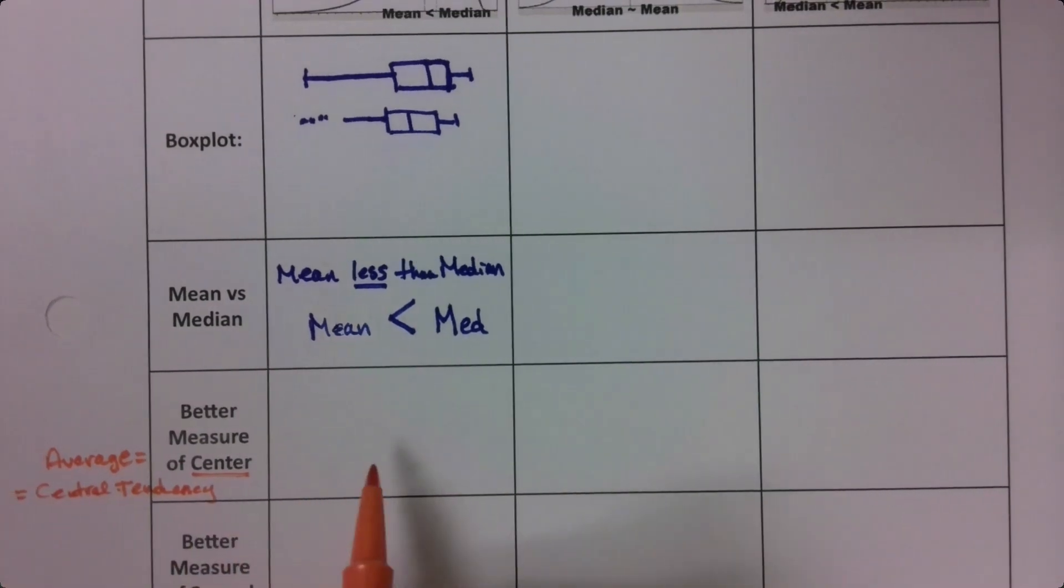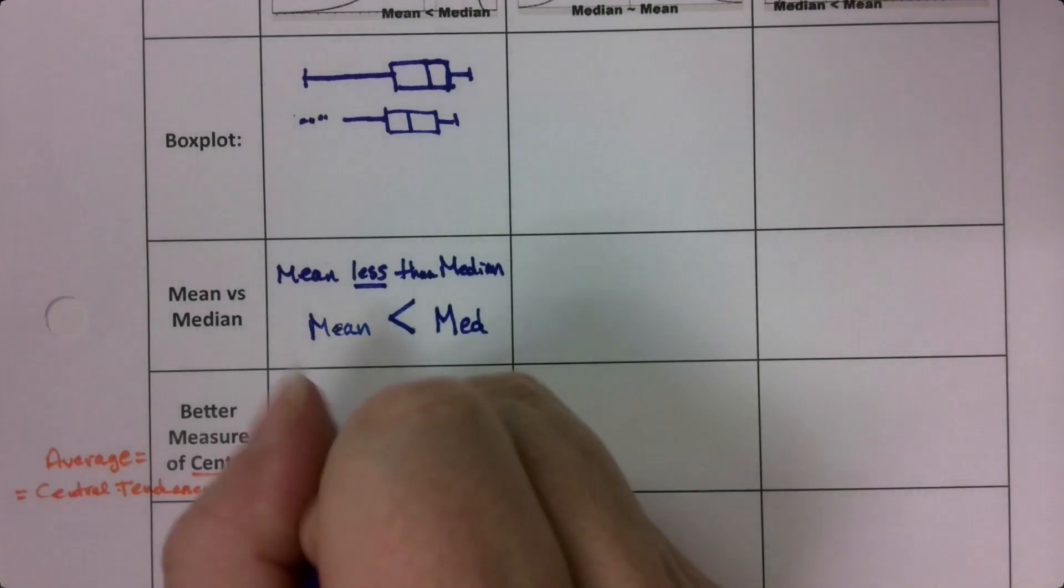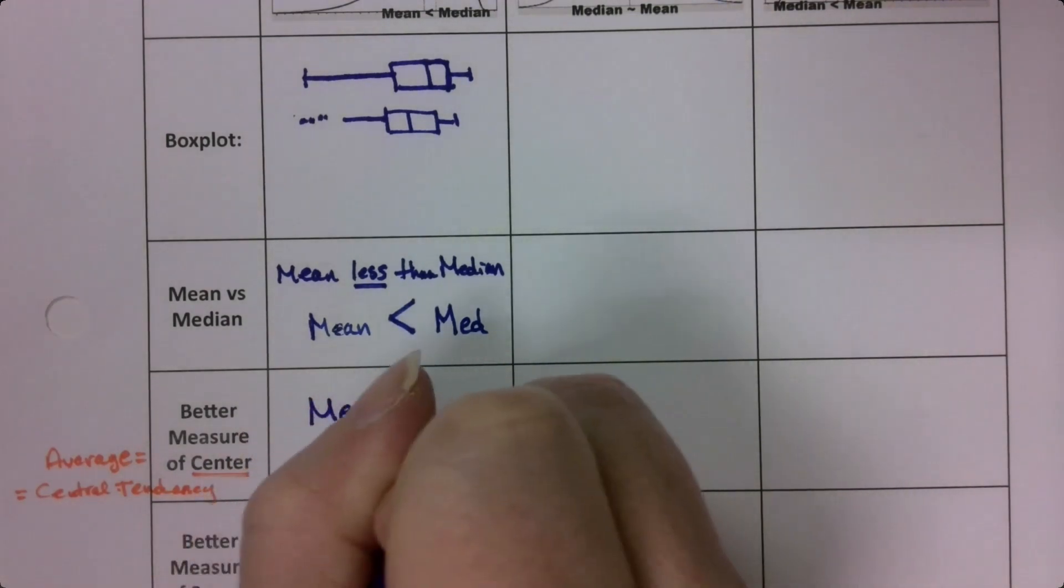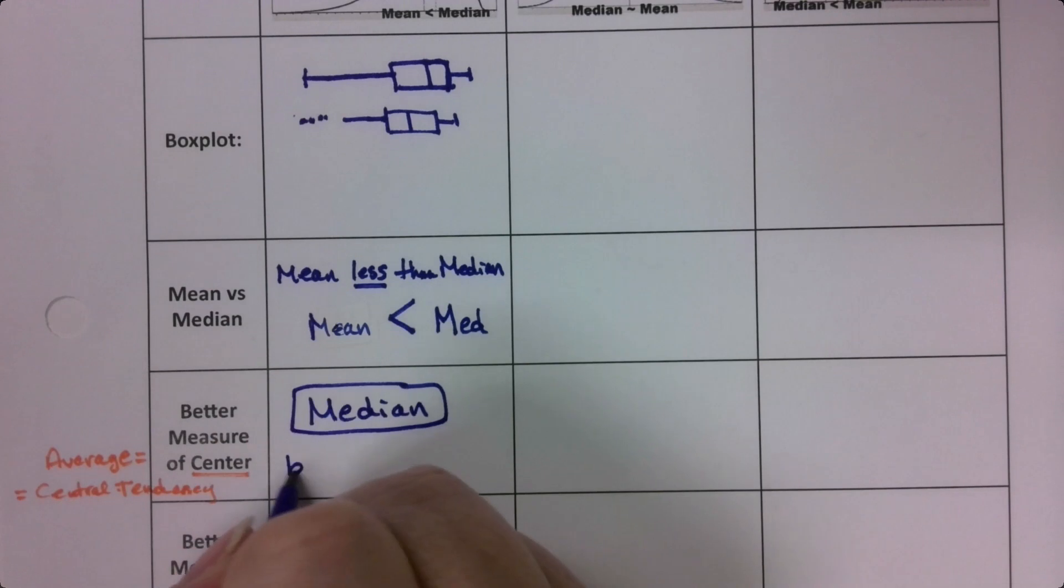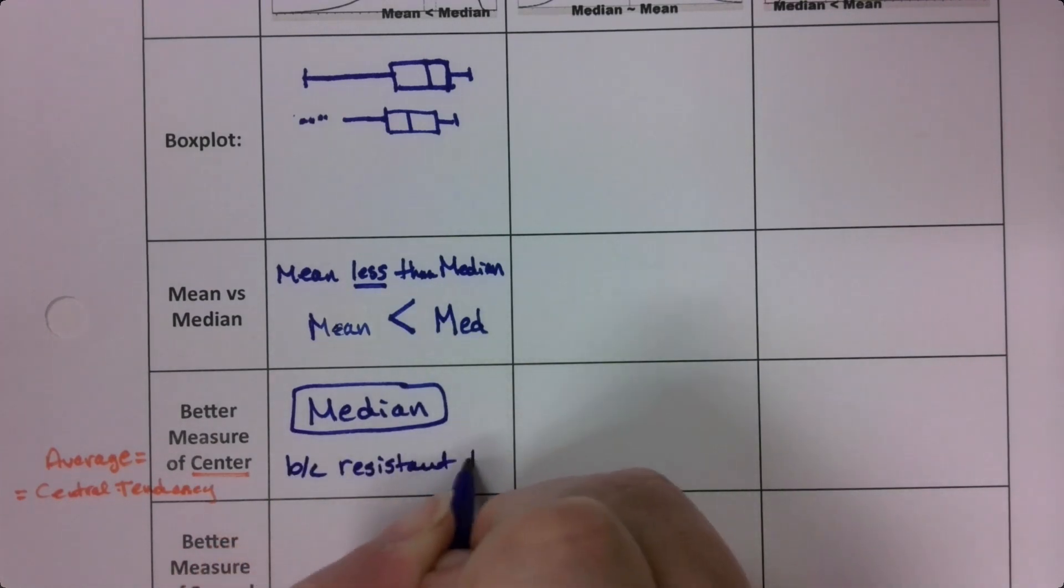Okay? So the better measure of center, the better measure of average, is the median. Because it's resistant. It resists the pull of those outliers. And to skewing.